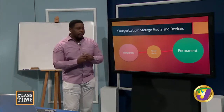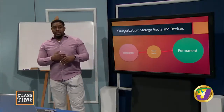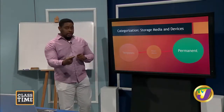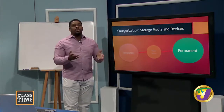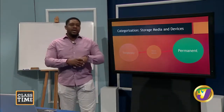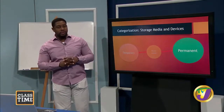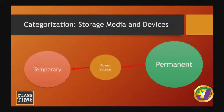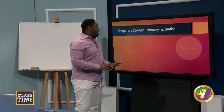There are two types of storage. One set stores information temporarily — as long as there is power on the device, the memory will store information. The other is permanent, meaning regardless of whether or not there is power, information will always be stored on that device or media. When we talk about temporary storage, we use the word memory, and the first thing that comes to mind is RAM — random access memory.